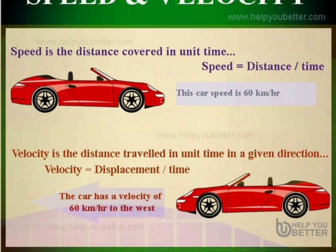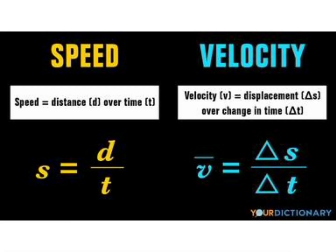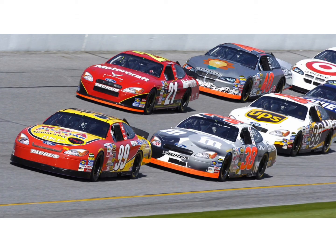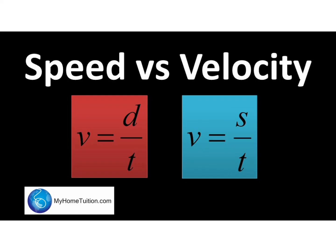So in this lecture we have understood what is velocity, and the formula: velocity is equal to displacement upon time, and the difference between speed and velocity. This is Lecture 2 of the chapter Motion. In the next lecture we will discuss acceleration, uniform acceleration, and equations of uniformly accelerated motion.